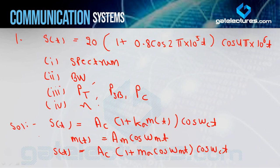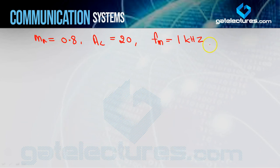For the carrier frequency fc, compare the term cos(4π×10⁶t) with cos(ωc·t). So ωc = 4π×10⁶. Dividing by 2π gives fc = 2×10⁶ Hz = 2 MHz. Now all the values are extracted: ma = 0.8, AC = 20, fm = 1 kHz, fc = 2 MHz.